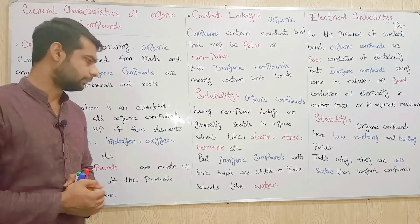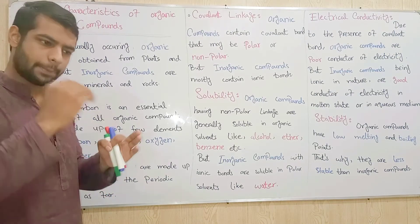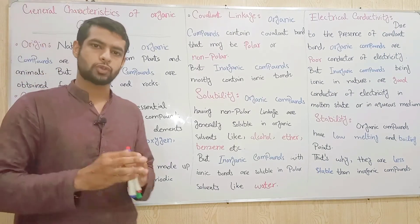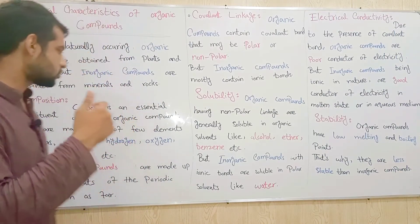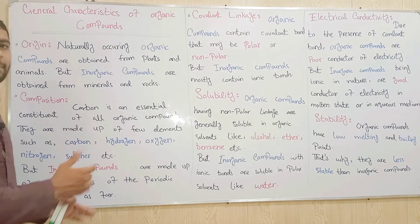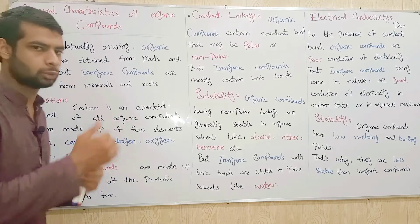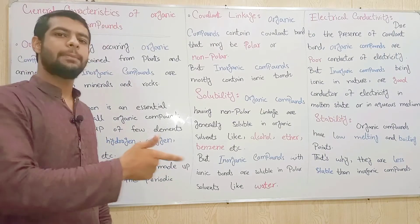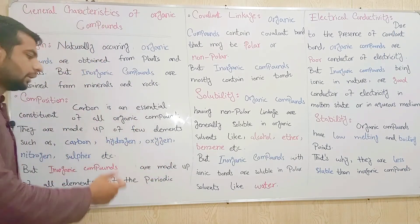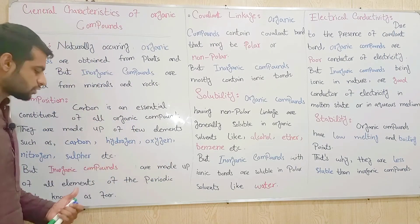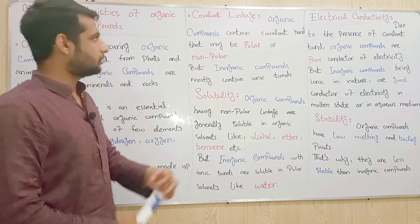دوسرا جو ہمارے پاس point ہے وہ ہے composition۔ جو ہمارے پاس organic compounds ہیں، ان میں جو essential element یعنی main element ہے وہ carbon ہے، اور carbon کے ساتھ جو elements ملتے ہیں وہ ہیں carbon, hydrogen, oxygen, nitrogen اور sulfur۔ باقی جتنے بھی elements periodic table میں ہیں — total 118 elements میں سے یہ نکال کر — وہ سب inorganic compounds میں study ہوتے ہیں۔